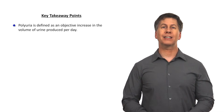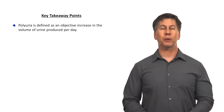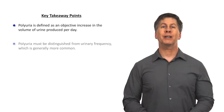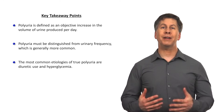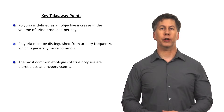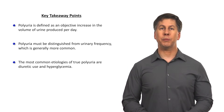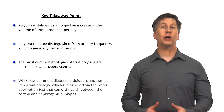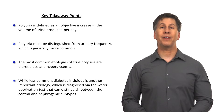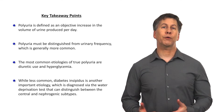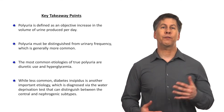Key takeaway points for polyuria: Polyuria is defined as an objective increase in the volume of urine produced per day and must be distinguished from urinary frequency, which is generally more common. The most common etiologies of true polyuria are diuretic use and hyperglycemia. And while less common, diabetes insipidus is another important etiology diagnosed via the water deprivation test, which can also distinguish between the central and nephrogenic subtypes.